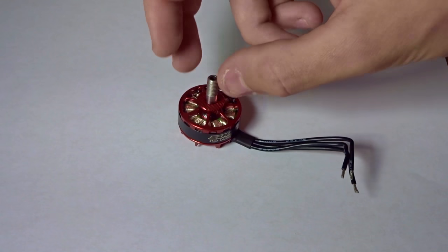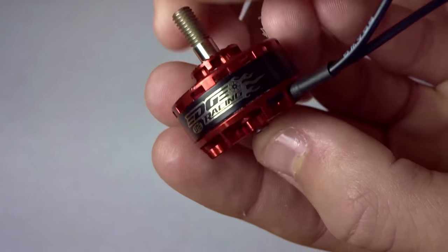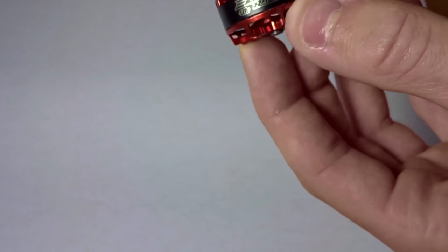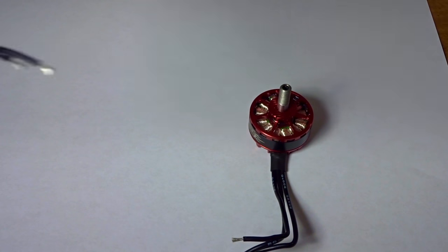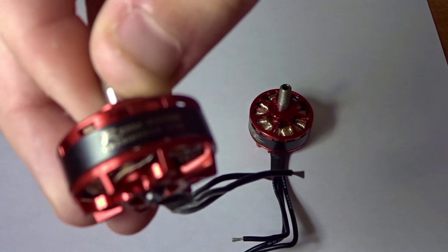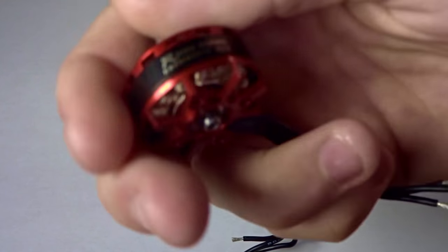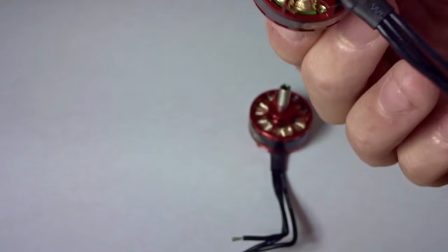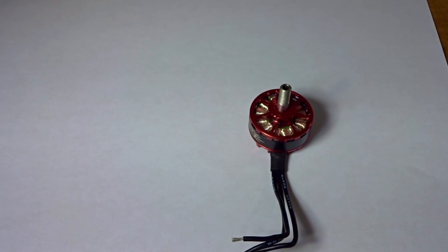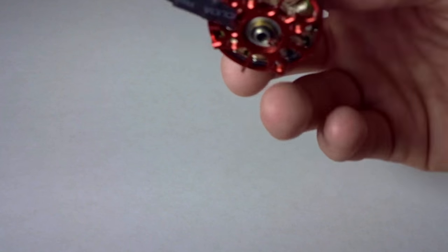These paired with a BLHeli S ESC should really help with that. I really like the physical design of these motors. There's no slop in the shafts. Banggood actually screwed up and sent me a 2204 2300 KV edition instead, so I'll have to get a new one.